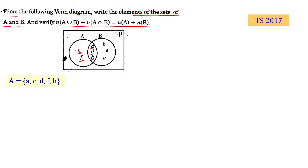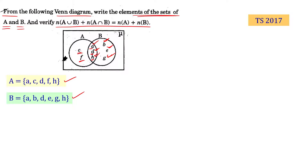Set B has 7 elements: A, B, D, E, G, and H. We have now written set A and set B in their roster form.